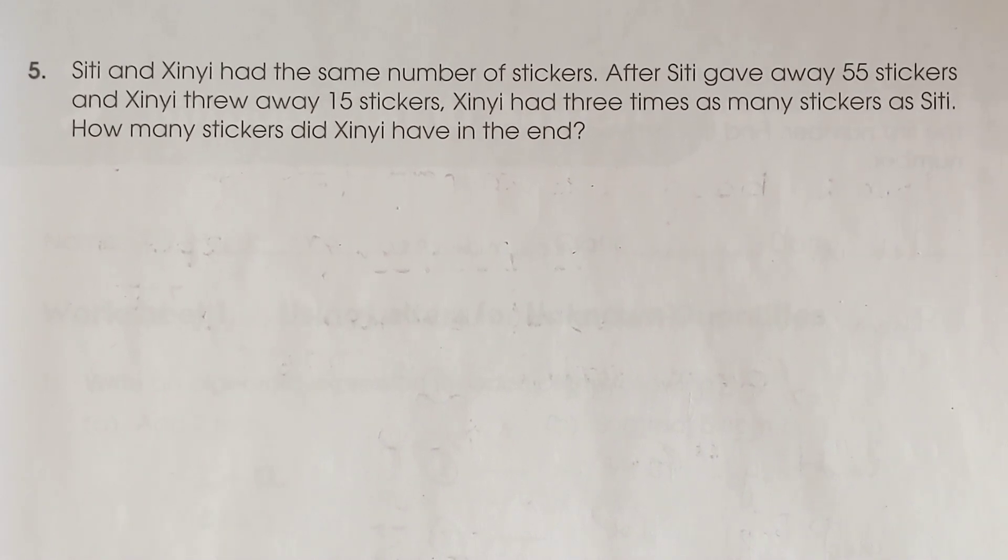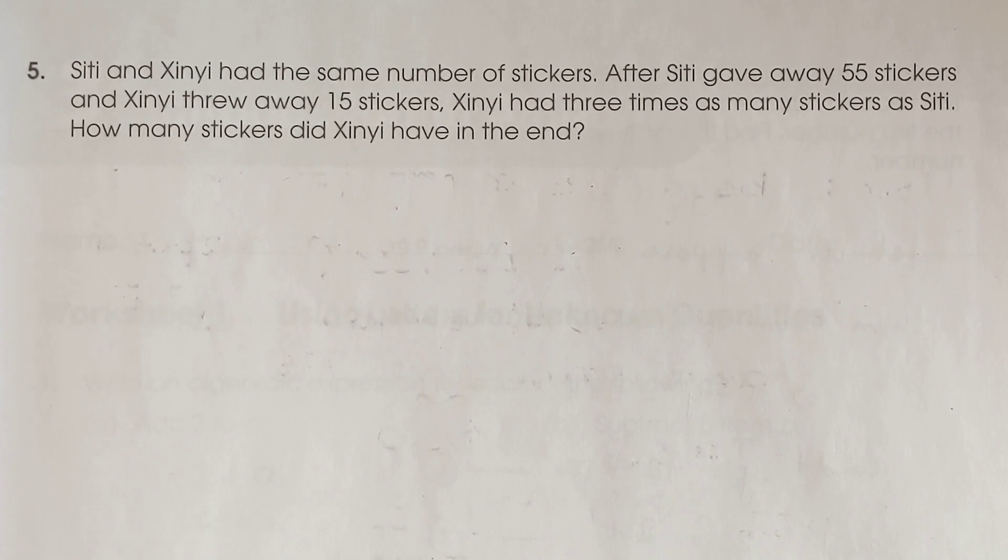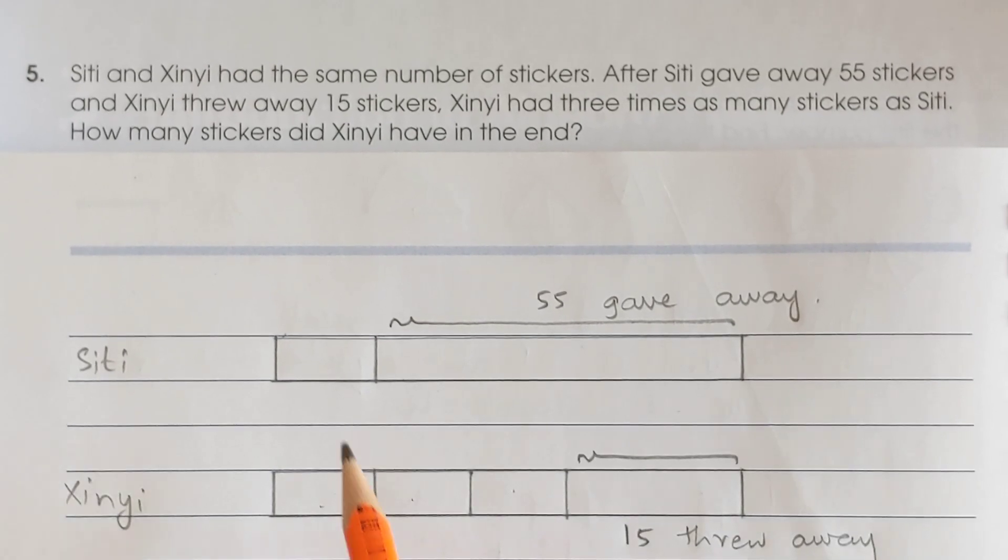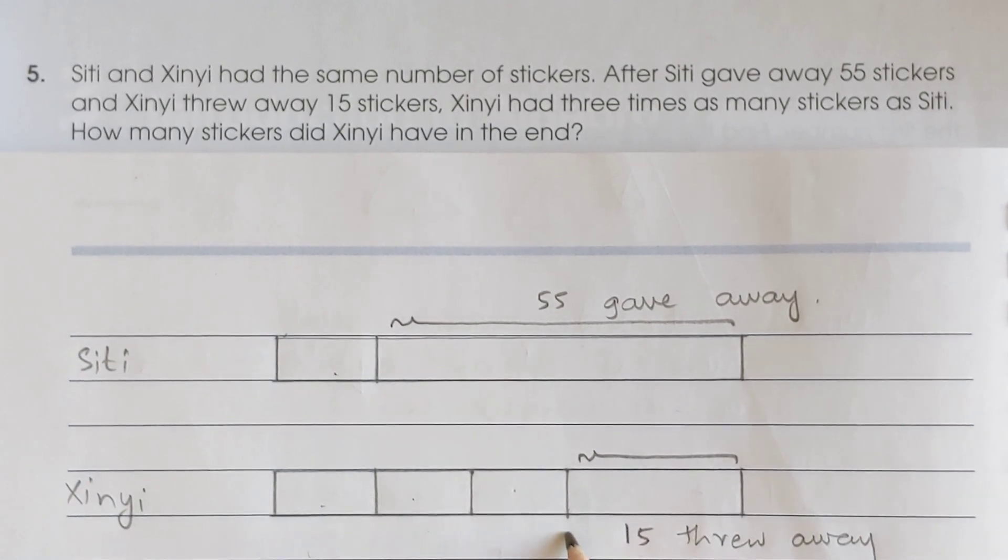Question number 5, page number 43. It says Siti and Zini have the same number of stickers. Two children, both have the same number of stickers. After Siti gave away 55 stickers and Zini threw away 15 stickers, Zini had three times as many stickers as Siti. The question is, how many stickers did Zini have in the end?